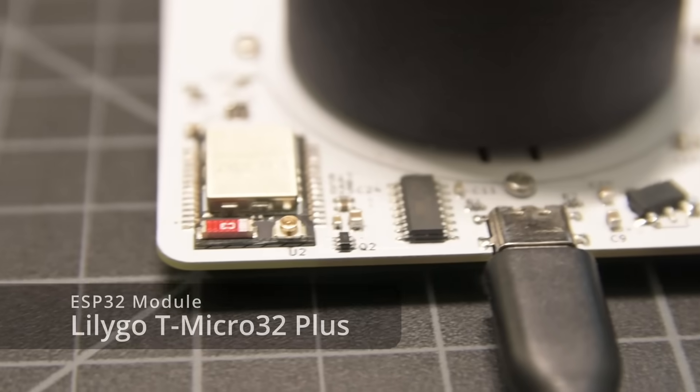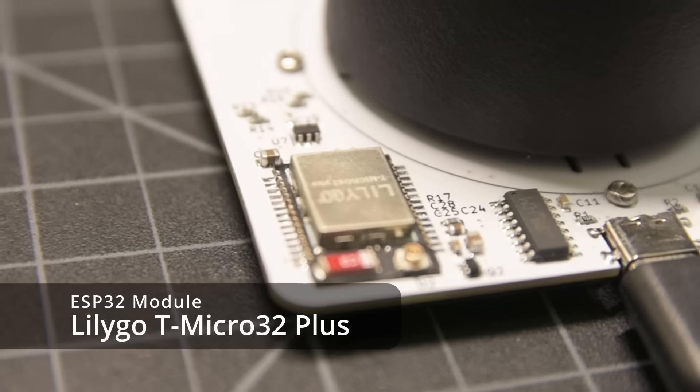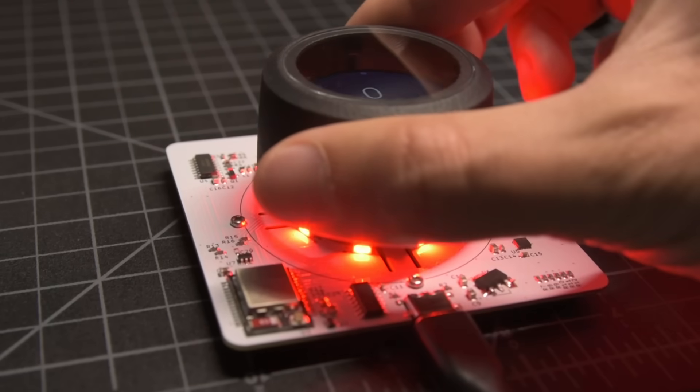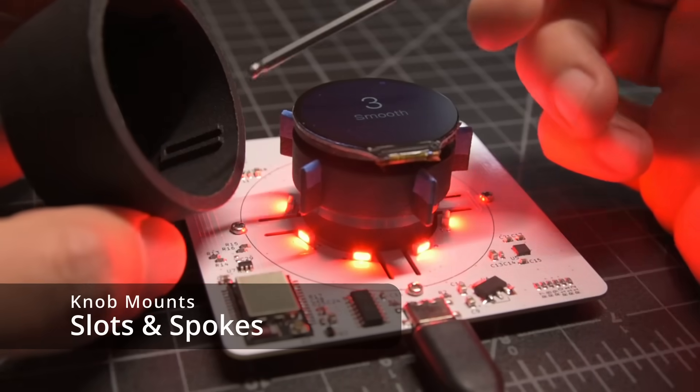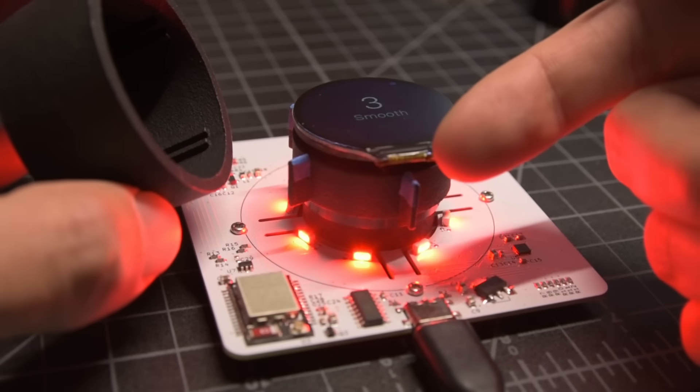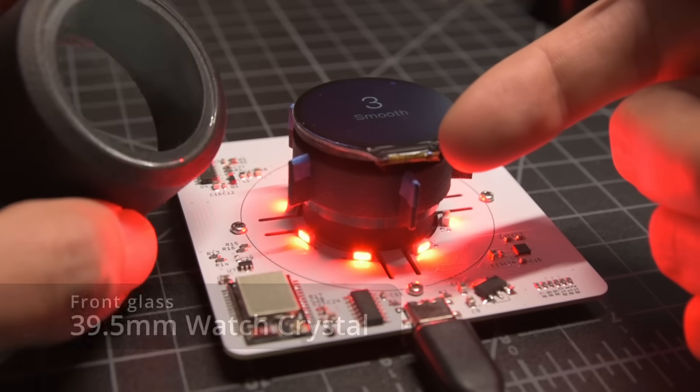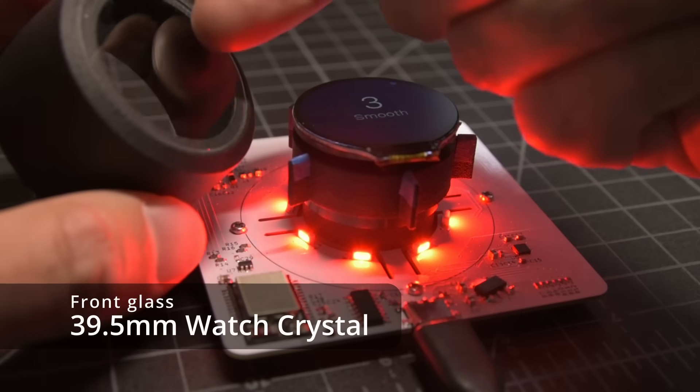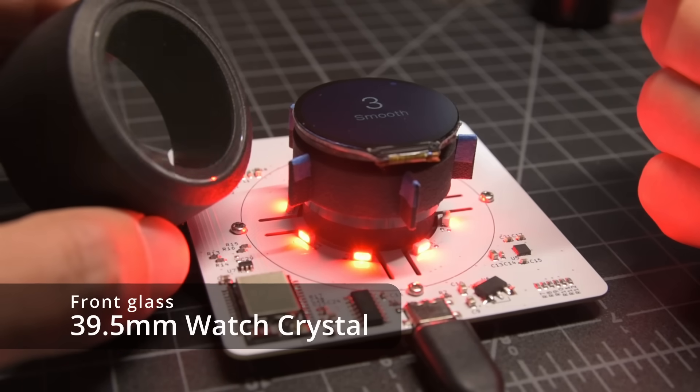Without the cover we can see a lot of the electronics like this ESP32 module, but let's also pull off the knob so we can get a better view. Inside, the knob has slots which fit onto the spokes on the motor and avoid this chip on the LCD, and on top it's got a 39.5mm watch crystal glued in place that protects the LCD.